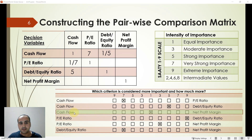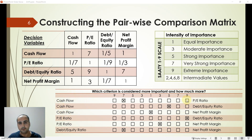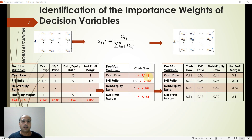For cash flow and net profit margin, the decision maker assigns equal importance, so 1 goes in the intersection cell and the reciprocal is also 1. The full comparison matrix can now be completed. Exercise the remaining parts yourself to understand how the comparison matrix is created from the questionnaire — it is not a difficult part, just make sure you can develop it on your own.